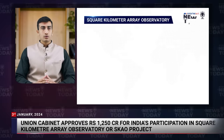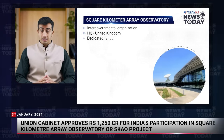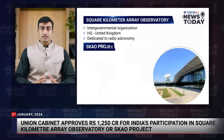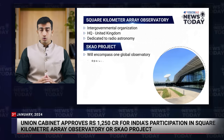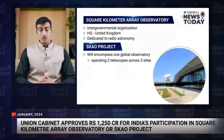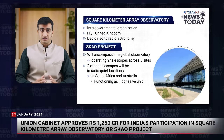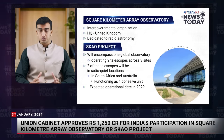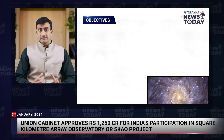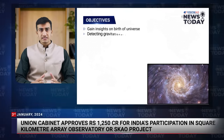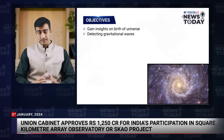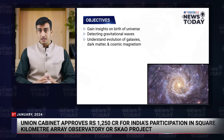Moving on to the next news: the Union Cabinet approves Rs 1,250 crore for India's participation in the Square Kilometre Array Observatory, or SKAO, project. The SKAO is an intergovernmental organization headquartered in the United Kingdom, dedicated to advancing radio astronomy. The project will encompass one global observatory operating two telescopes across three sites — two situated in radio-quiet locations in South Africa and Australia — functioning as one cohesive unit, with an anticipated operational date set for 2029. The objectives of SKAO include gaining insights into the birth of the universe, detecting gravitational waves, understanding the evolution of galaxies, dark matter, and cosmic magnetism.